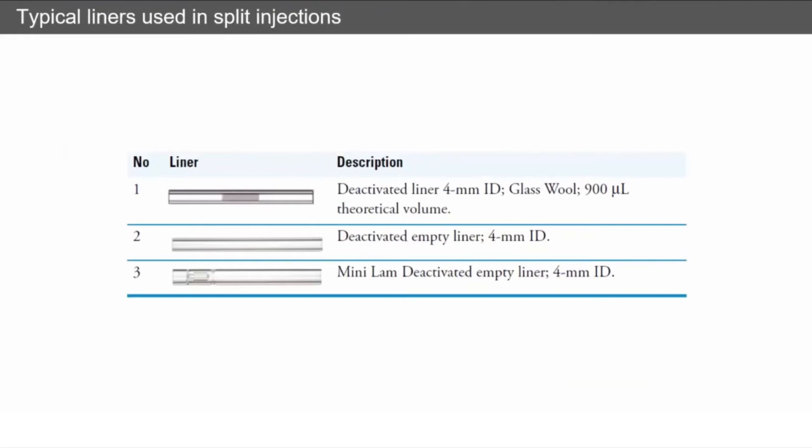So typical liners that we're going to use: typically we have an empty deactivated straight-through type liner to allow for these large flows coming around the bottom of the inlet. Typically they'll be deactivated and depending on the injection solvents, etc., you'd either have glass wool or no glass wool.